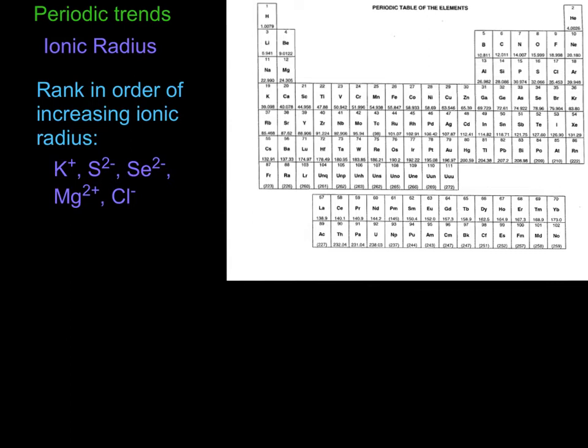So let's go ahead and just look at the two cations first. Here's magnesium and here's potassium. I see that magnesium has 12 protons and only 10 electrons.